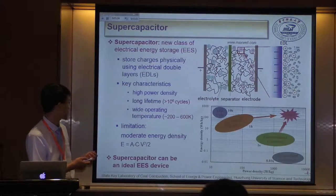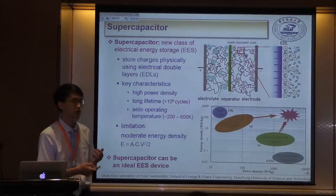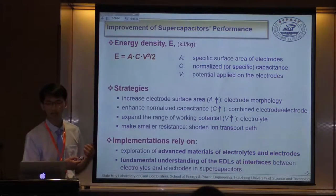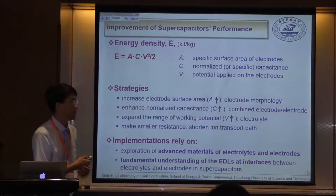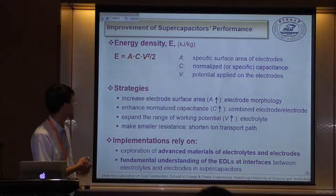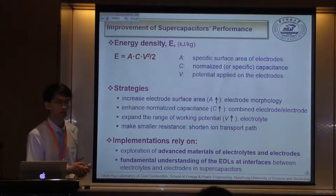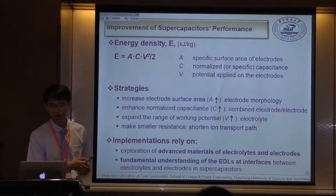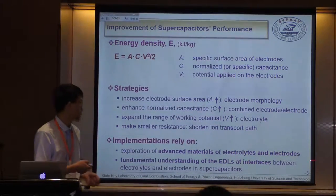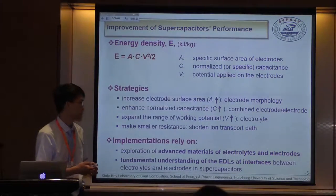So, if one can improve the energy density of a supercapacitor, it can be an excellent electrical energy storage device. The energy density can be determined by a simple equation. From this equation, we can identify strategies such as increasing the electrode surface area, increasing the normalized capacitance, or enlarging the working potential range. These strategies rely on exploration of advanced materials for both electrodes and electrolytes, and more importantly on a fundamental understanding of the electrical double layers at the interface.